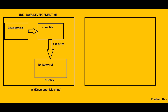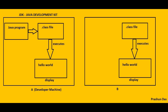Now suppose we have another machine named as B. The main purpose of machine B is to simply display the result or lines hello world, i.e. it will execute the class file of the Java program and display the result. Now what is it in machine B that will help it in this process? It is the JRE, i.e. Java Runtime Environment.